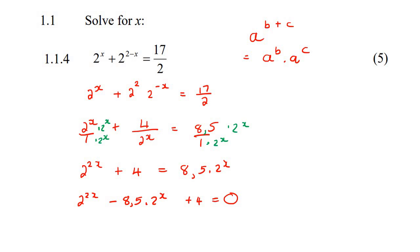For example, if you have x squared minus 3x minus 4, then this exponent is double that exponent over there.